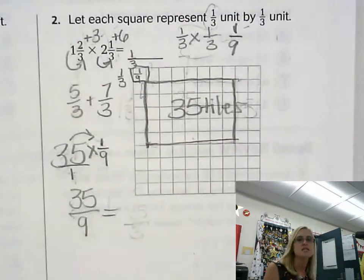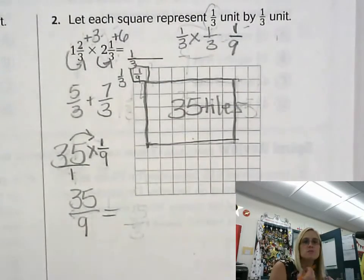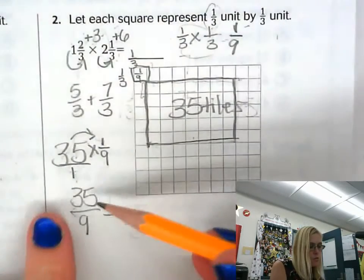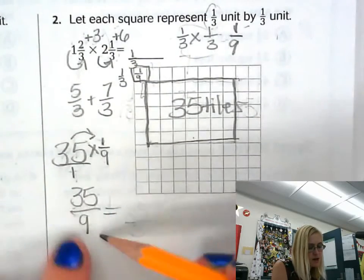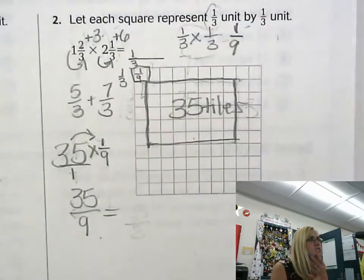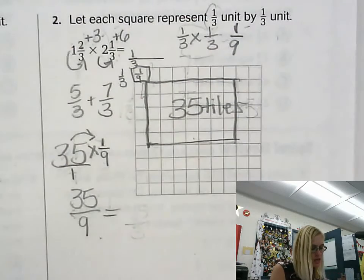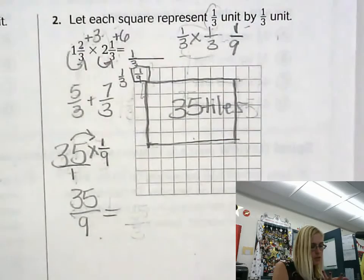So now what I need to do is I need to figure out, well, this is an improper fraction, but I need to go back to a mixed number. So I need to figure out 35 divided by nine equals what? So I'm going to think about my multiples of nine. I have nine, 18, 27,